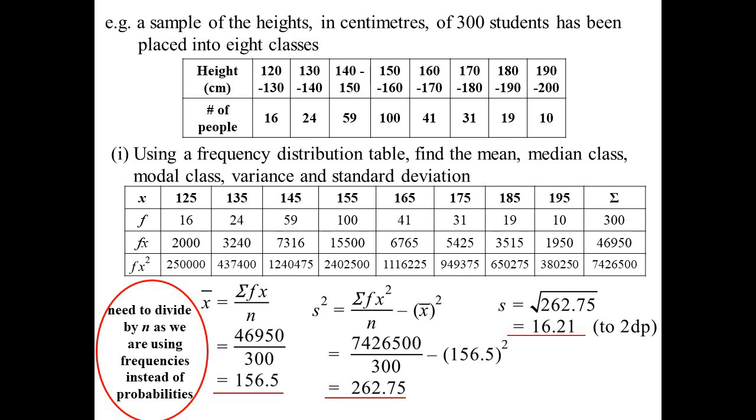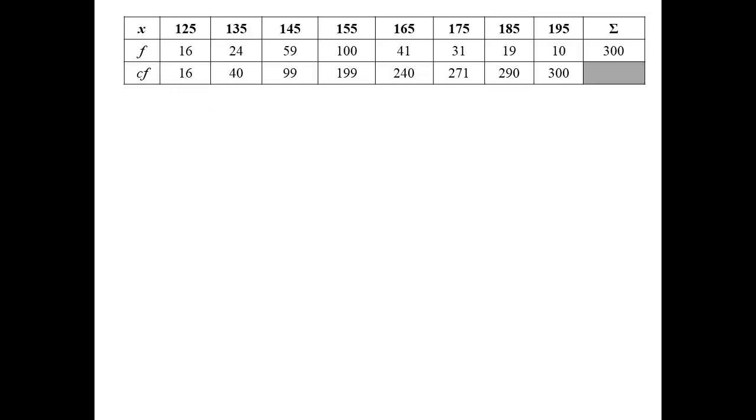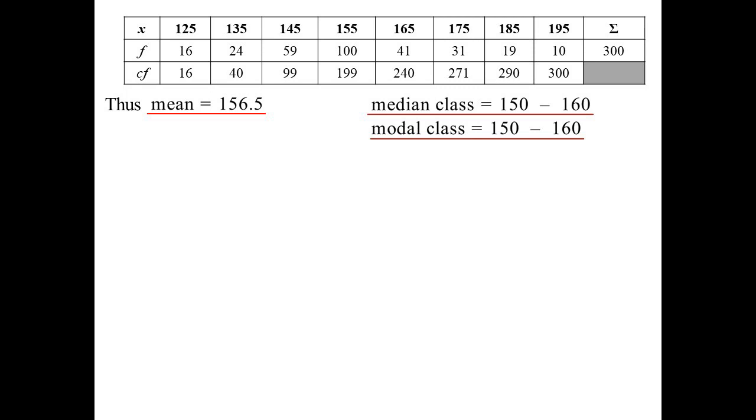We want to find all these other things. I'm going to need a cumulative frequency. So there's my cumulative frequency distribution. The mean we worked out, 156.5. There it is. The median class, that's where cumulative frequency comes in handy. I end up in the class. It's the one where the class center was 155, so the actual class was 150 to 160. The modal class also tends to be 150 to 160 here. So both of them are giving us the same measure for the center. Variance, we found out, was 262.75. Deviation was 16.21.